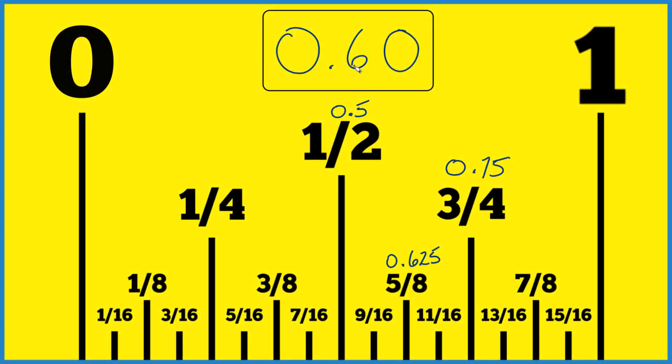So if you need to find 0.6 or 0.60 inches on a ruler or a tape measure, this is how you do it, or one way to do it at least.